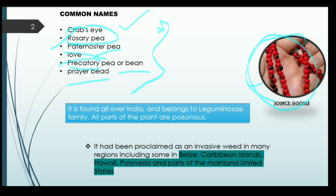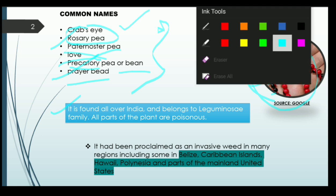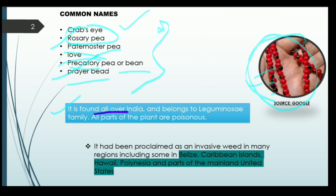It is also known as rosary pea or prayer bead, as rosary is used for the purpose of praying. These are the beads of Abrus precatorius. Talking about the distribution of this plant, it is found all over the nation and belongs to the Leguminaceae family. You must know that the entire plant is poisonous.